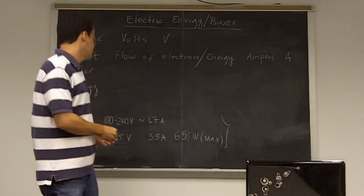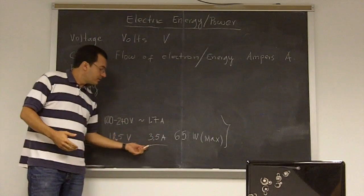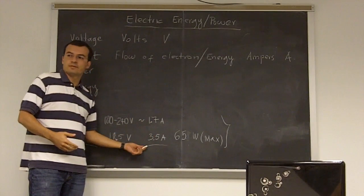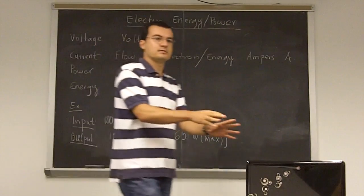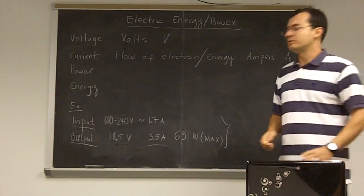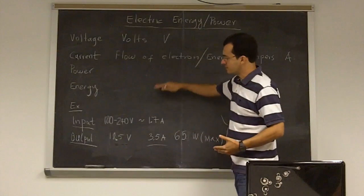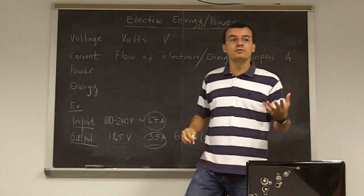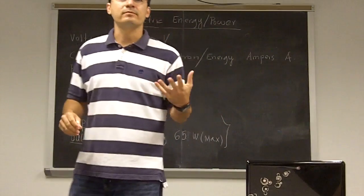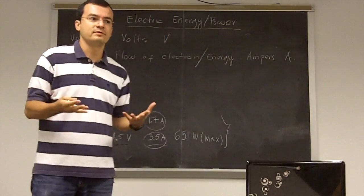So the input is 1.7 ampere. The input current is 1.7 ampere. And the output current is a little bigger, yeah, a little bigger. 3.5 ampere. Okay. So when you are using that little charger, your flow of electrons is given by the current. If the current is zero, what does it mean? What do you think if the current is zero? No electricity.